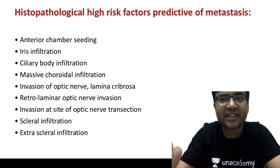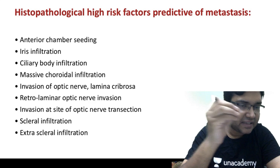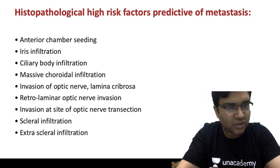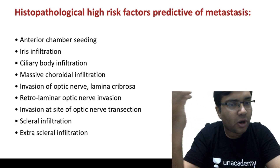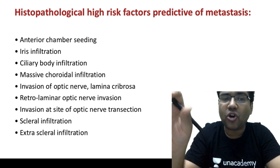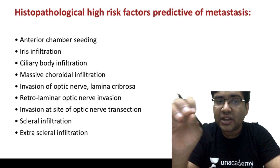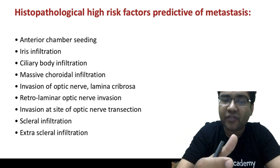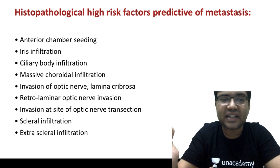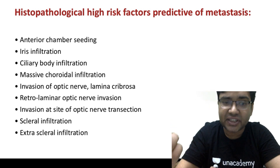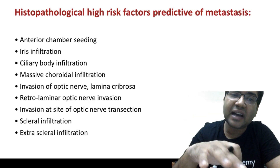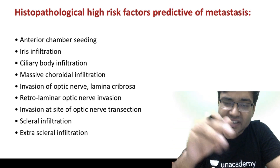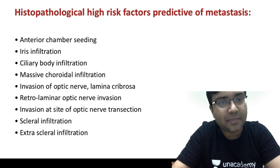Histopathological high risk factors include: anterior chamber seeding, iris infiltration, ciliary body infiltration, choroidal invasion, optic nerve invasion at the lamina cribrosa or retrolaminar region, invasion at the surgical cut end of the optic nerve, scleral invasion, or extrascleral infiltration. When these factors are present, a PET scan is required to assess for metastasis.